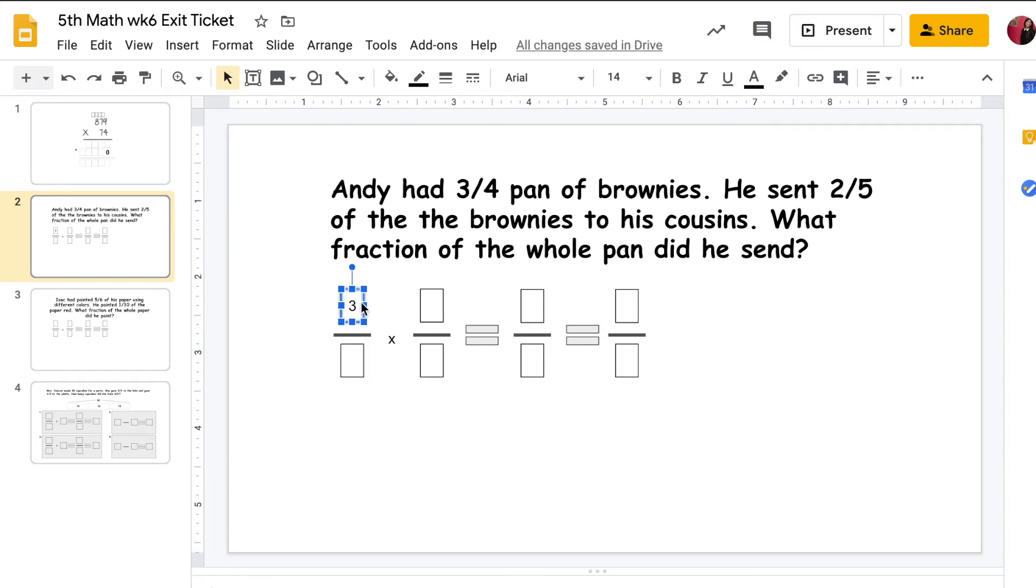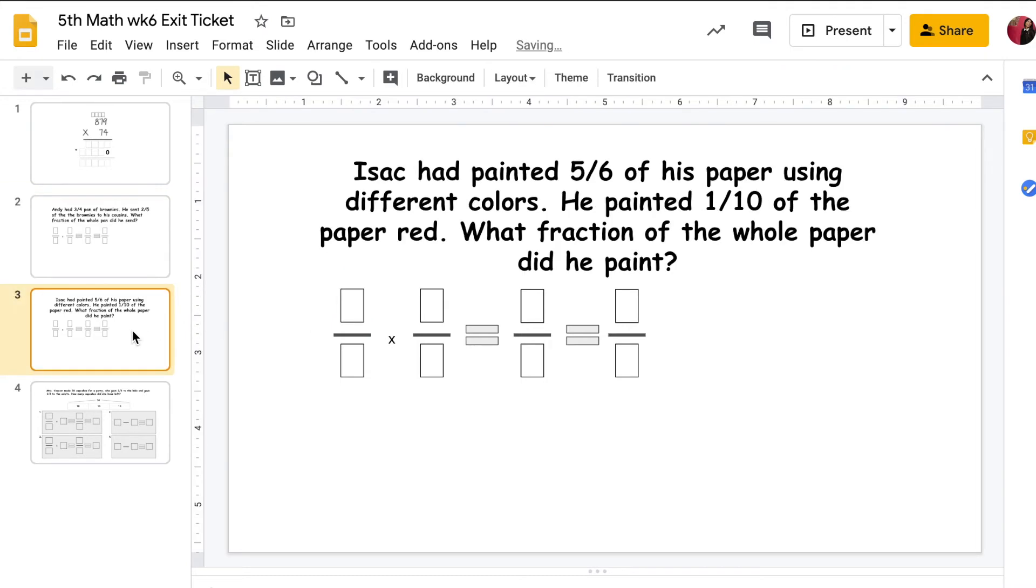Then after you're done working on slide 2, you're going to move on to slide 3. It says, Isaac had painted five-sixths of his paper using different colors. He painted one-tenth of the paper red. What fraction of the whole paper did he paint? This is, again, similar to slide 2.